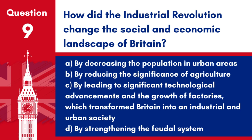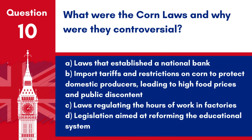Question 9: How did the Industrial Revolution change the social and economic landscape of Britain? a. By decreasing the population in urban areas. b. By reducing the significance of agriculture. c. By leading to significant technological advancements and the growth of factories, which transformed Britain into an industrial and urban society. d. By strengthening the feudal system. Answer: c. The Industrial Revolution marked a major turning point in history, with its impact on the social and economic structure of Britain being profound and lasting.